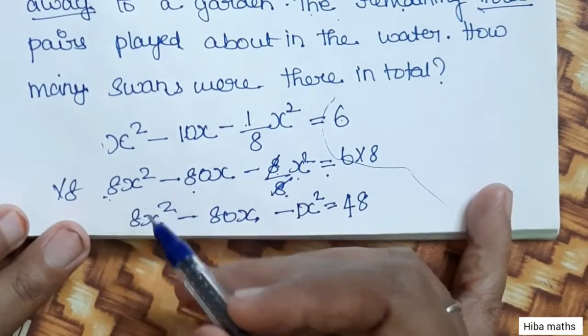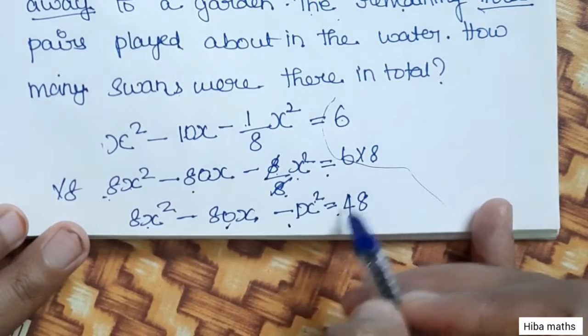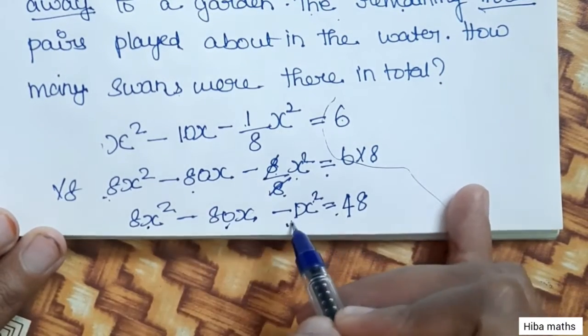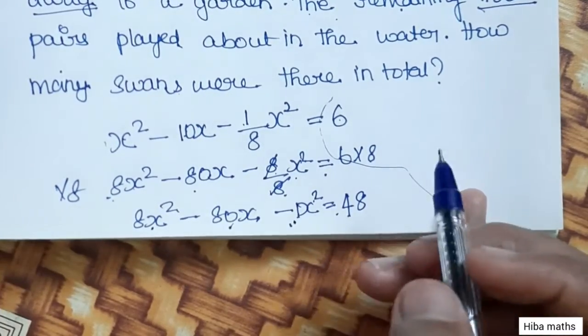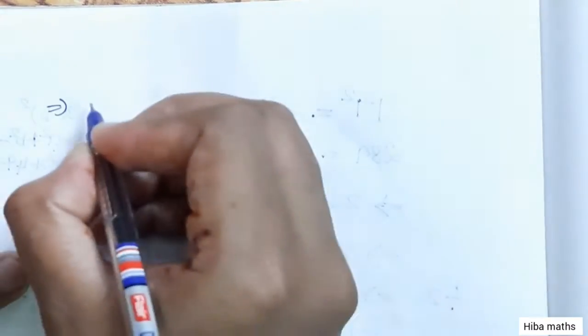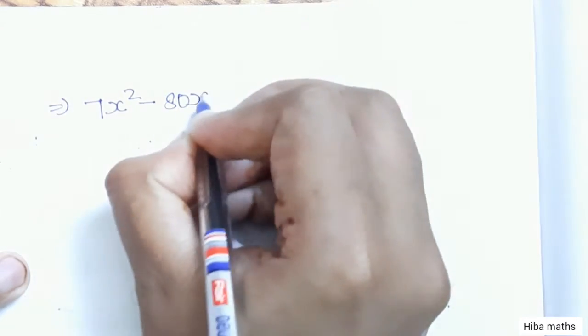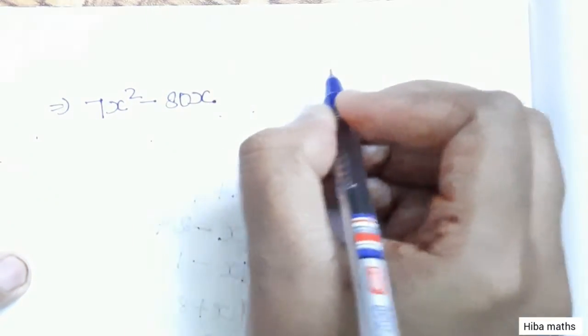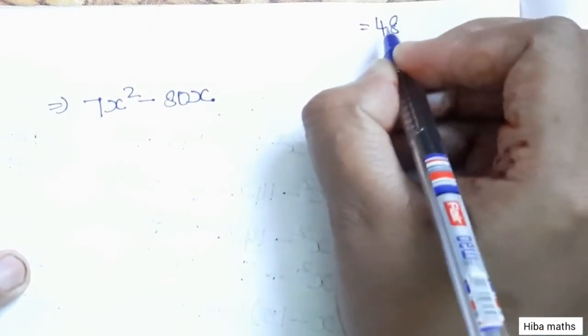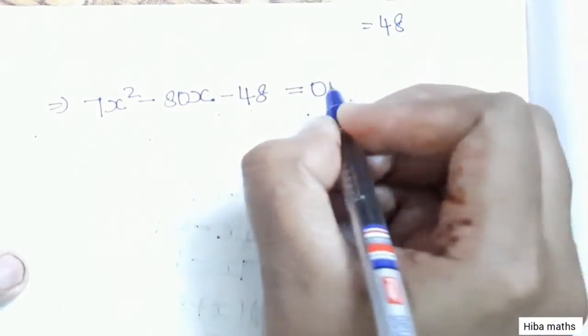This simplifies to 7x² - 80x = 48, or 7x² - 80x - 48 = 0.